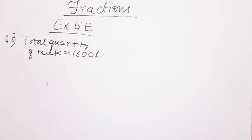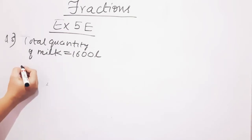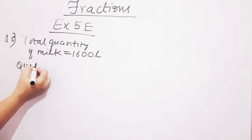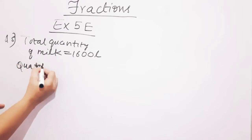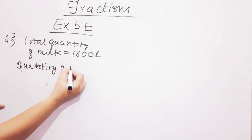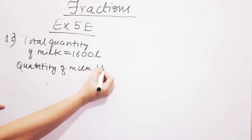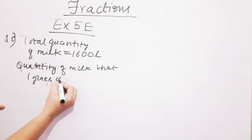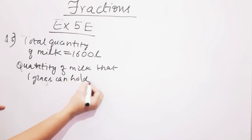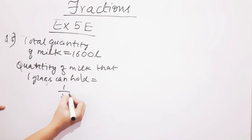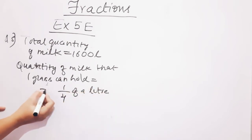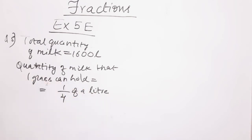1 litre is equal to 1000 millilitres. So, one glass can hold 1/4 of a litre. Now, 1/4 of a litre — since 1 litre equals 1000 millilitres, let's calculate how many millilitres one glass can hold.